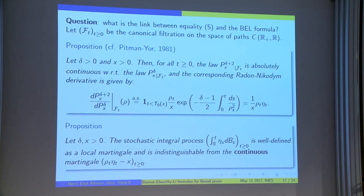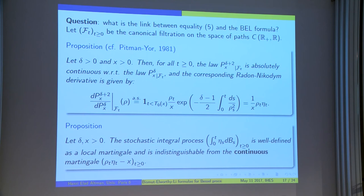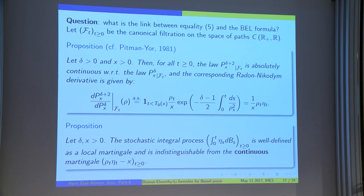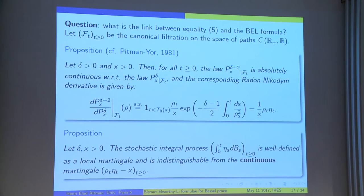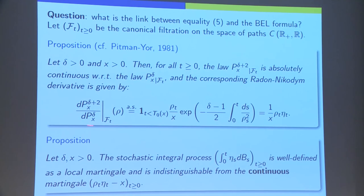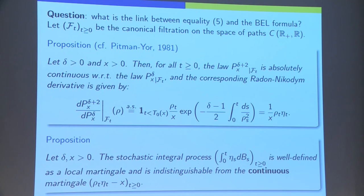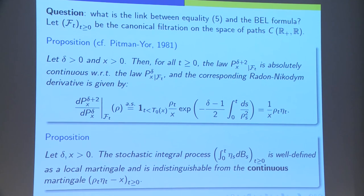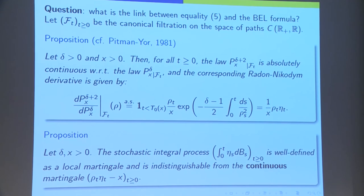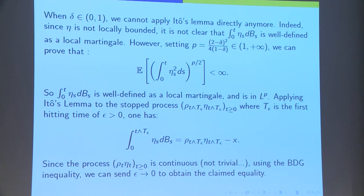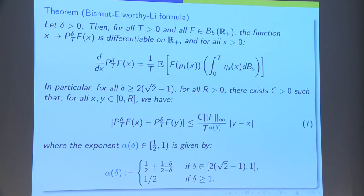Nevertheless, we have a nice proposition, which is a variant of results by Pitman-Yor, which says that the δ plus 2 Bessel is absolutely continuous with respect to the δ Bessel on any finite interval. And, we have an expression for this Radon-Nikodym derivative. Then we can use some nice formulae on ρ and η, where I will not detail here. And, as a consequence, we finally obtain this Bismut-Elworthy-Li formula.